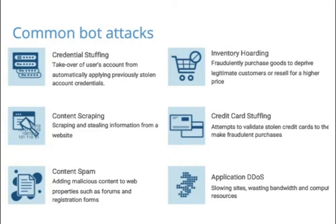One example is our customer AngelList — the world's largest startup community. They manage over $1 billion in assets and support over 2 million candidates in job searches. They ran into an issue where bots were coming onto their website and scraping proprietary information — information about candidates, startup and investor profiles, job listings, and more.